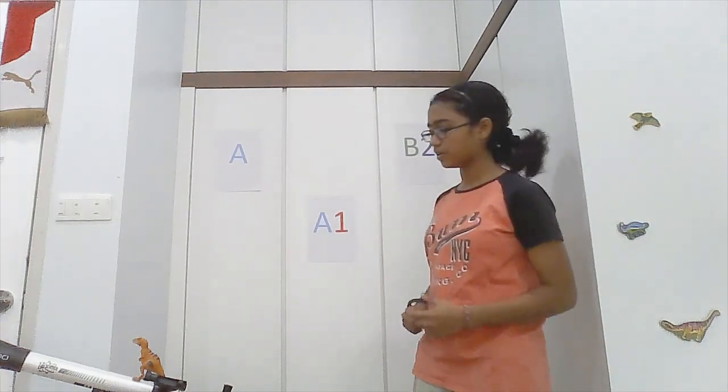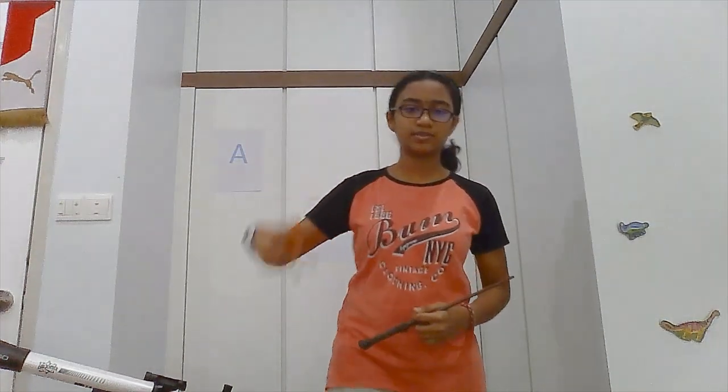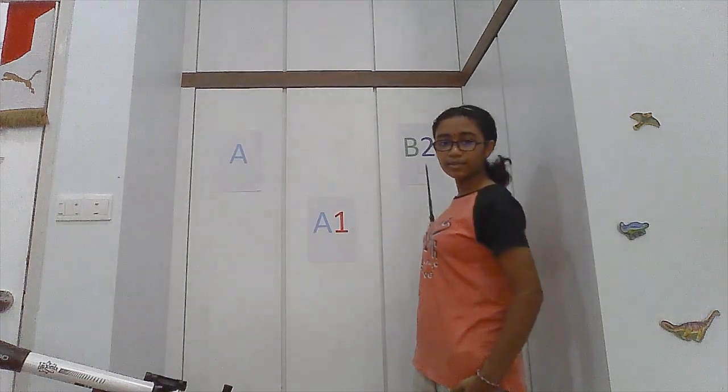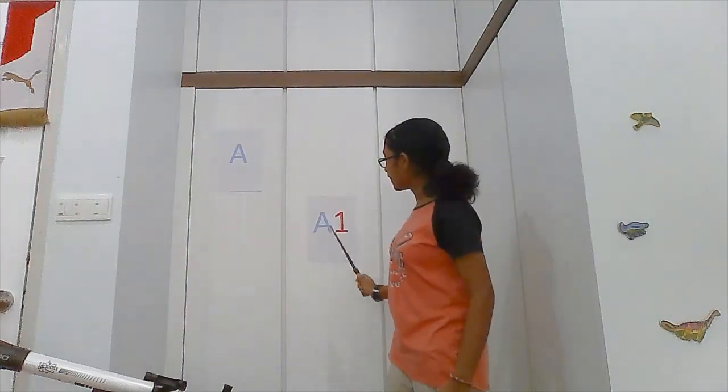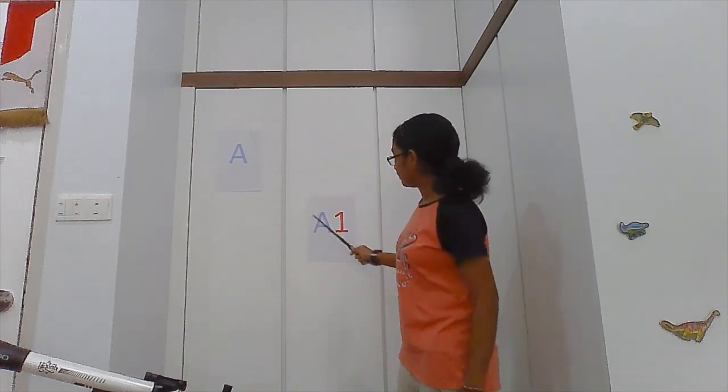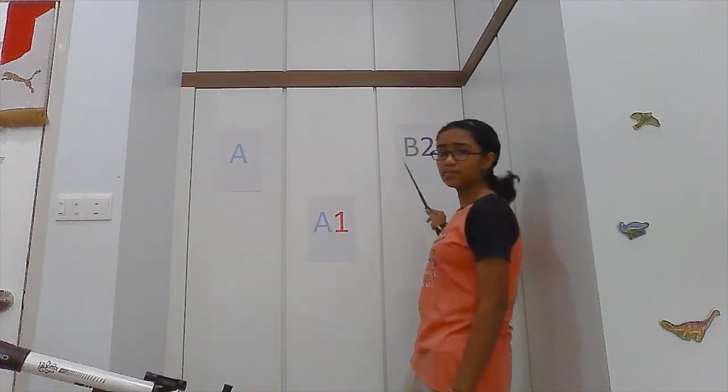It might seem tricky at first, but let me try to explain it to you in a simple and fun manner. As our subject, we would be using dinosaurs. To explain, I have three pieces of paper labelled A, A1, and B2. As we can see, A and A1 have the same genetic trace, or letters that resemble each other. B2, however, has nothing in common with A and A1.